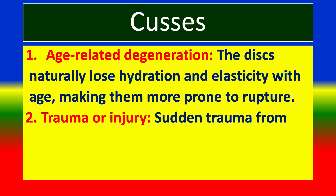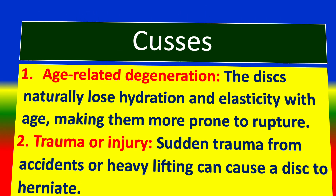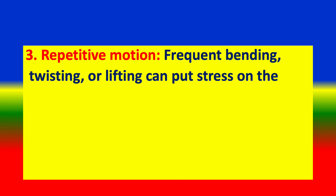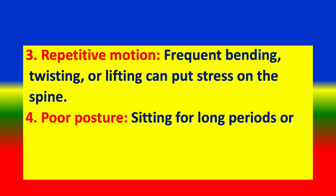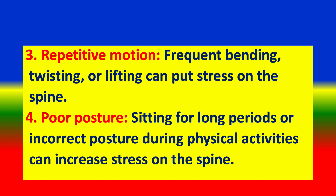Causes of herniated disc include trauma or injury — sudden trauma from accidents or heavy lifting can cause a disc to herniate. Repetitive motion — frequent bending, twisting, or lifting can put stress on the spine. Poor posture — sitting for long periods or incorrect posture during physical activities can increase stress on the spine.